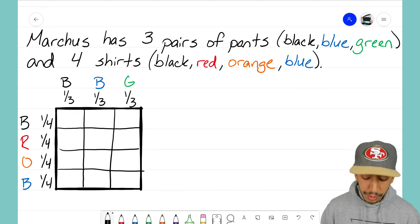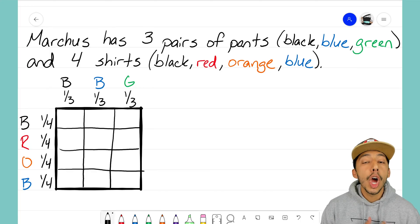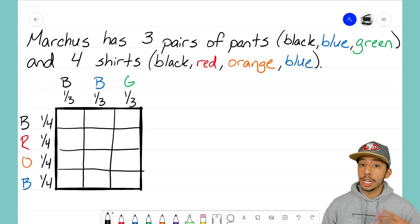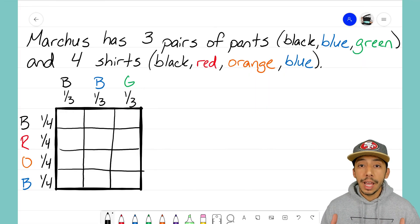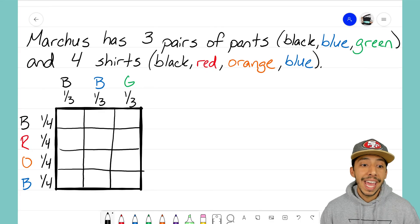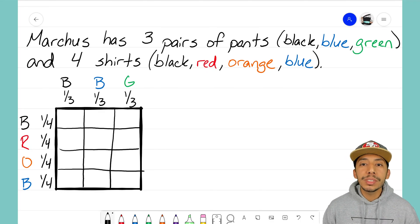Notice that in that sample space I have 12 different boxes in my area model. Each box there represents a combination of a pair of pants and a shirt. So for this problem here, Marcus has 12 different outcomes that he could pick. For an area model, what we want to do now is we want to multiply the fractions on the sides of each of these little rectangles to see what the probability is.